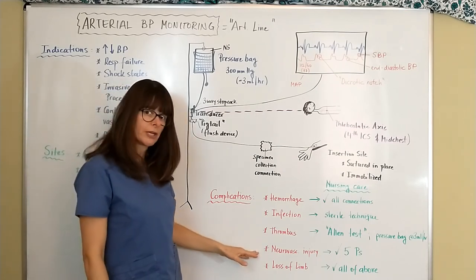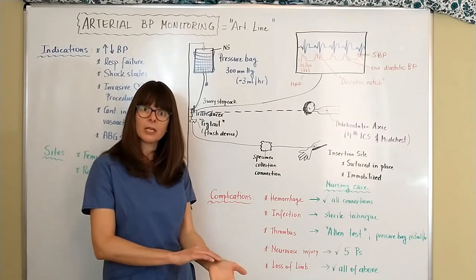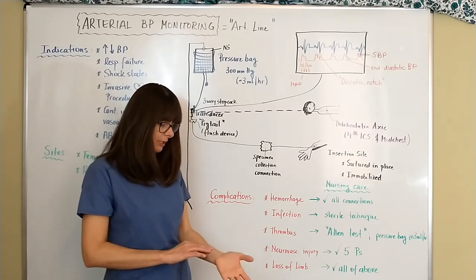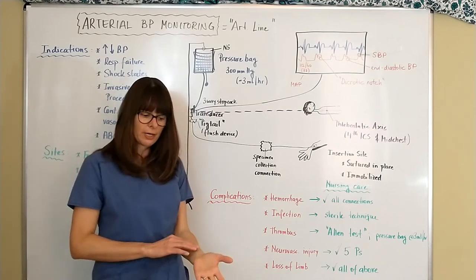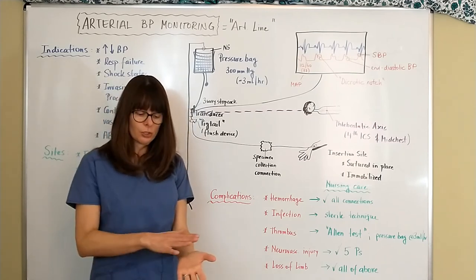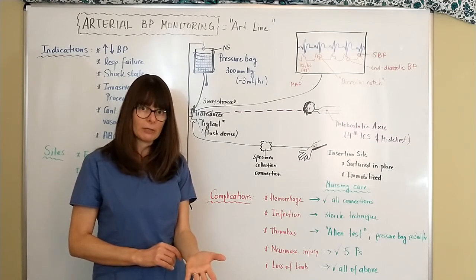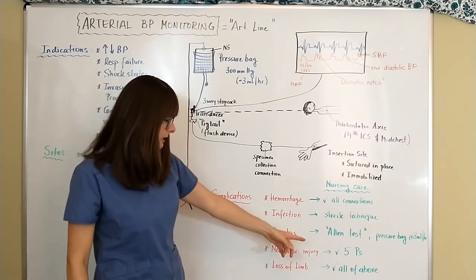Now another complication is neurovascular injury, so maybe a nerve gets injured with the insertion or anything else that could happen here. And whenever we check for distal circulation or distal patency of any kind of extremity we always check the five P's.